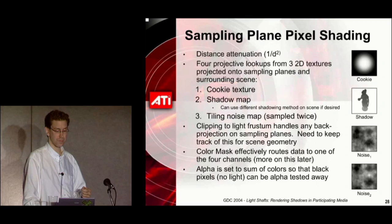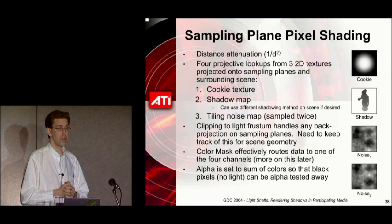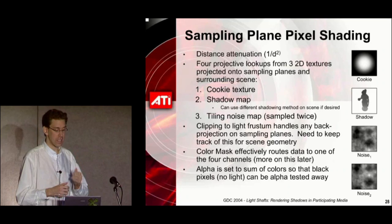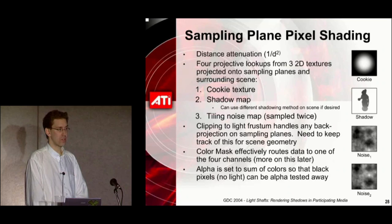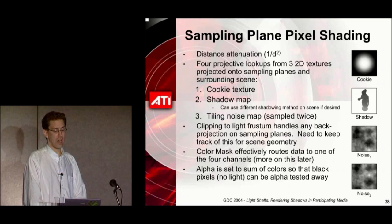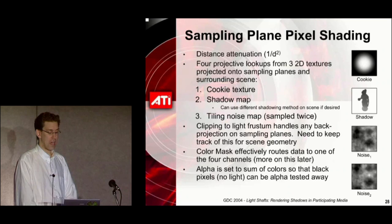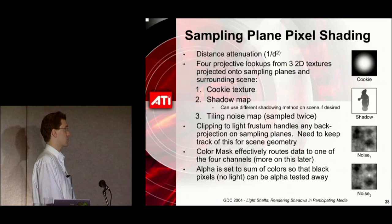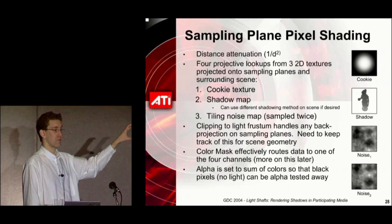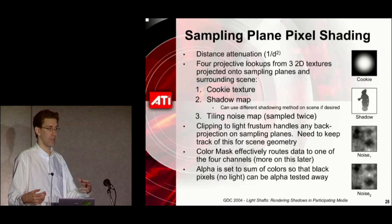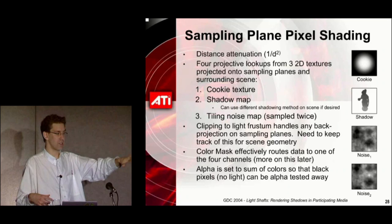How do we shade those sampling planes? There are a number of terms in our shading equation. First, we have a distance attenuation — I just use a one-over-D-squared term. You can do much more sophisticated things; there's a lot of literature on atmospheric scattering, but distance attenuation was simple and looked fine. After that, I do four projective lookups from three different 2D textures: first, a cookie — a common term in lighting design for a little mask you put in front of a light source to give it some shape, used in stage lighting or film to cause mottled leaves or Venetian blind patterns to set a scene.